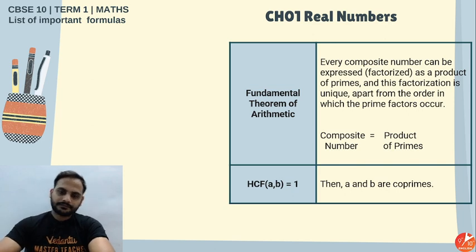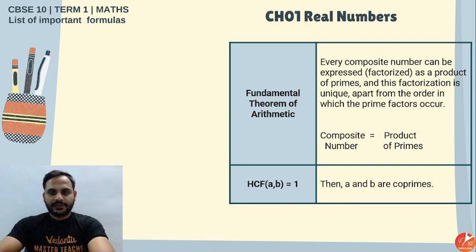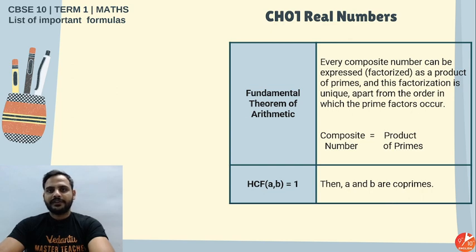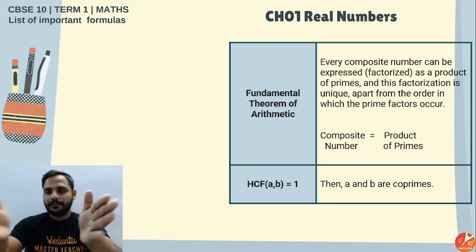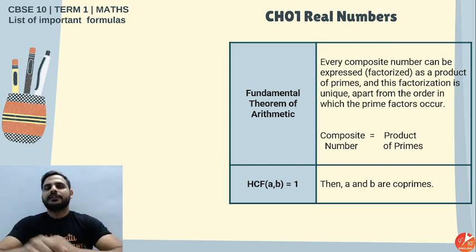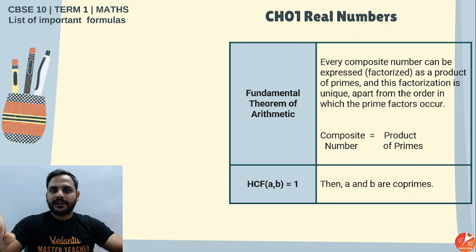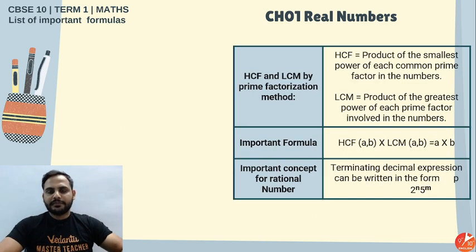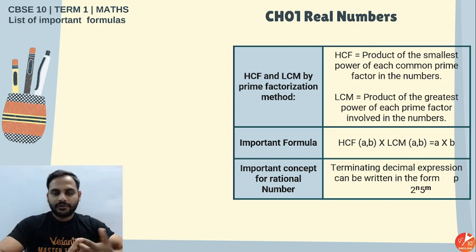When HCF of a and b is equal to 1, we call a and b co-prime numbers. Remember there is a difference between a number being prime and two numbers being co-prime. Co-prime is a relative concept — two numbers are co-prime if their HCF is 1, meaning they have no common factor other than 1.